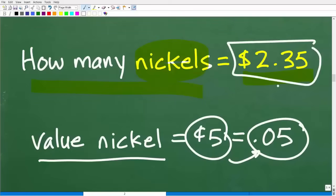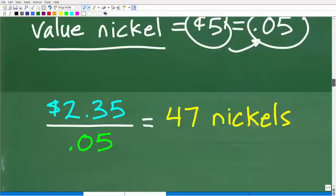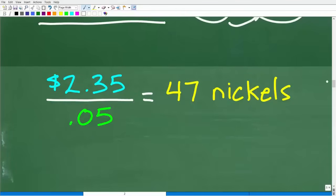So all we need to do is to take this amount and divide it by this amount, and we'll get the number of nickels. So this is a simple division problem. $2.35 divided by 0.05. Again, let's use our calculator, make our life easy. And the answer is going to be 47. But of course, that is equivalent to 47 nickels. So this is how we handle this simple money problem.